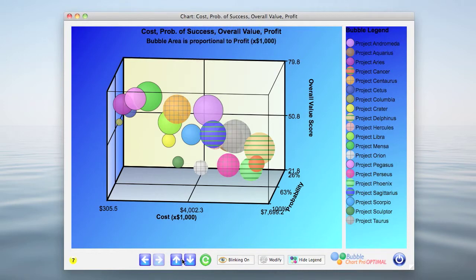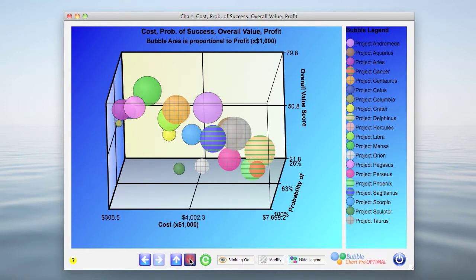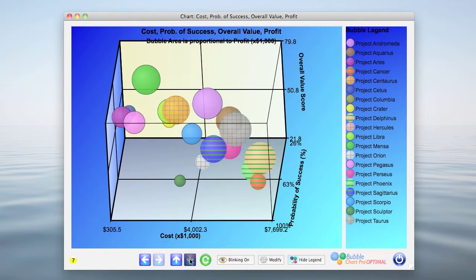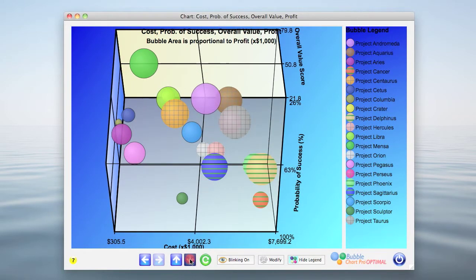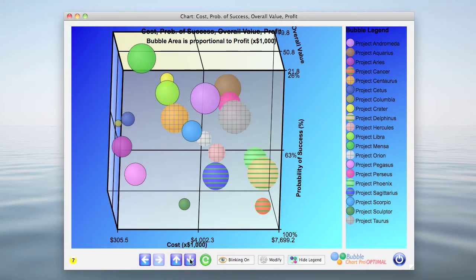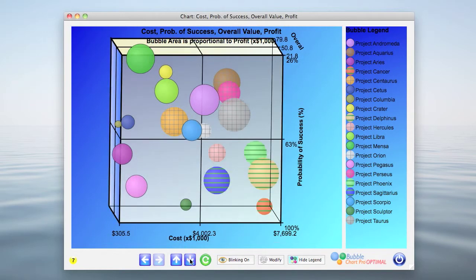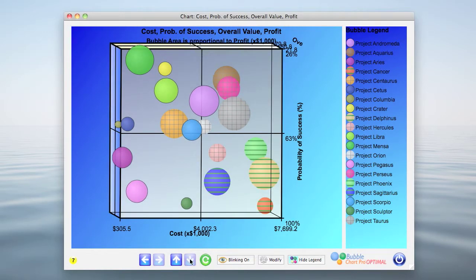Next, we can rotate the bubble chart downward so we can see the relationship between the probability of success, which is now on the vertical axis, and cost, which is still on the horizontal axis. By clicking the green reset button, we can return immediately to the default view.